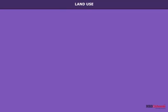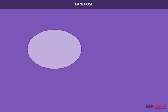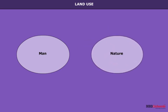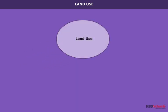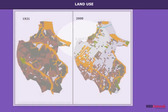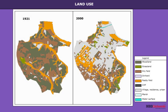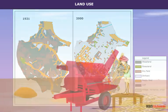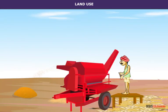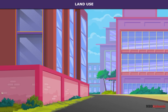The use to which land is put both by man and nature is together described as land use. The proportion of land put to particular use and its distribution over an area or the world is known as land use pattern. For example, land use cannot be explained simply by the economic use of the land like agriculture, housing and roads.